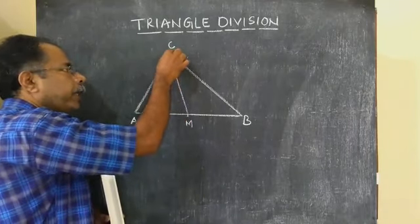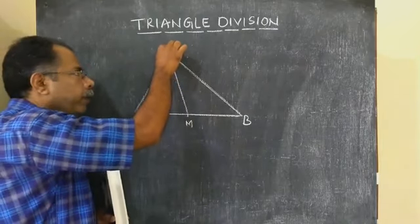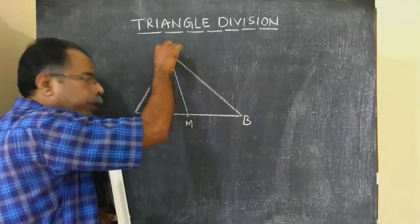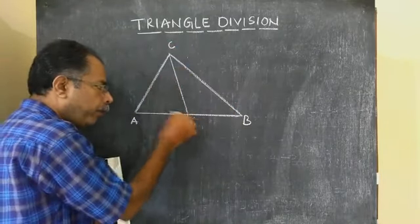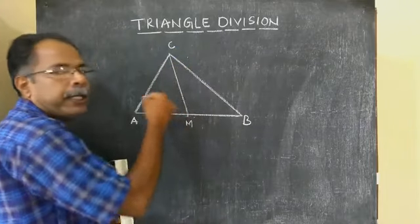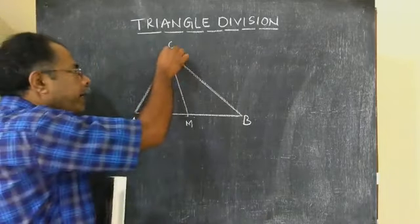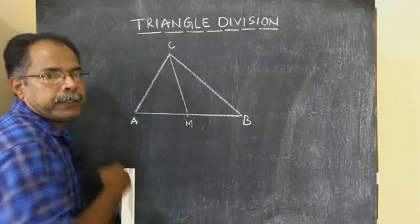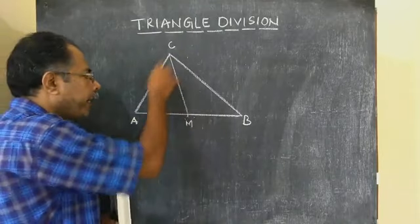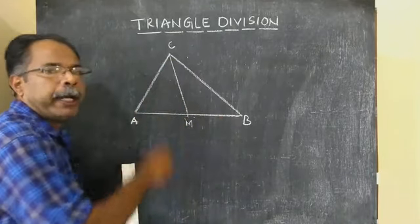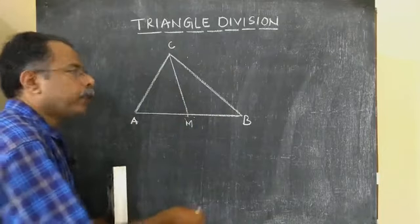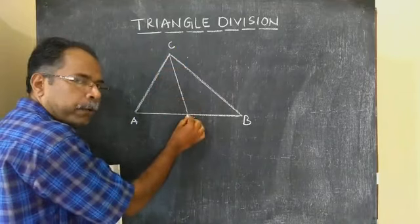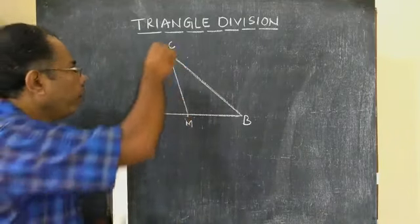I am drawing the line from vertex C. The opposite side is AB. Joining one vertex to the midpoint of the opposite side — that line is CM. The line CM divides this triangle into two triangles. Triangle ABC is divided into two triangles by drawing a line from a vertex to the midpoint of the opposite side.